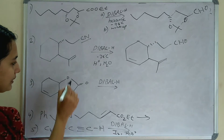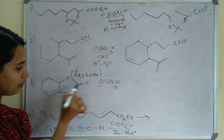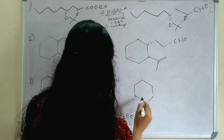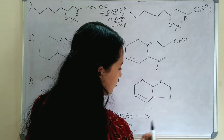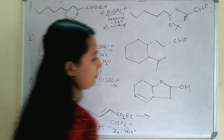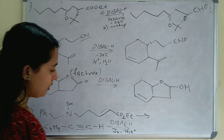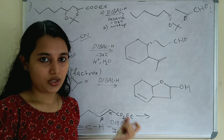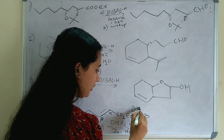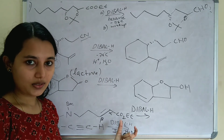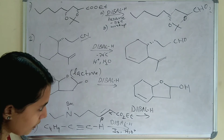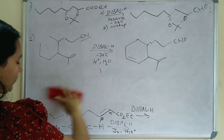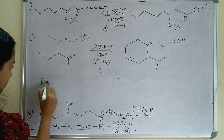In the third example, this is a lactone — a cyclic ester with C=O. We know lactone is converted to lactol using DIBAL-H. In the fourth example, this is a special case: an alpha-beta unsaturated carbonyl compound. When DIBAL-H is added to an alpha-beta unsaturated carbonyl compound, we get an allylic alcohol instead of an aldehyde. So the product is not an aldehyde — it is an alcohol.